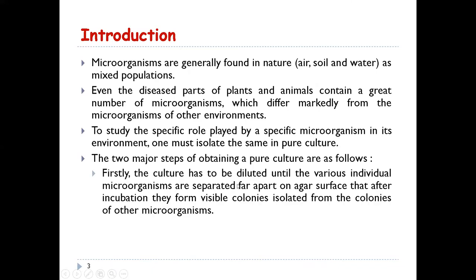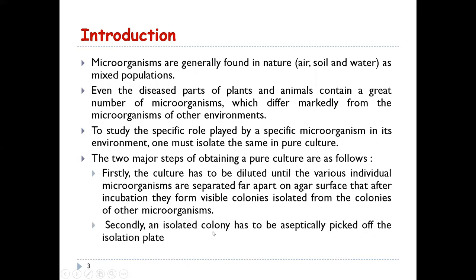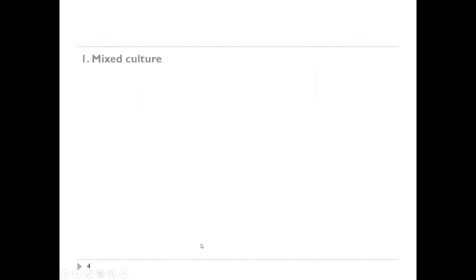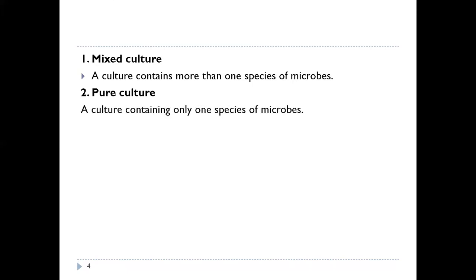Two major steps of obtaining a pure culture are: first, you dilute the culture on an agar surface so that after incubation they form visible colonies; and secondly, after isolated colonies have been obtained, they must be aseptically picked off onto an isolation plate and then incubated. There are two types of culture: mixed culture, which contains more than one species, and pure culture, which contains only one species of microbes. The isolation technique is used to remove the desired microorganism from the mixed culture and transfer it to a pure culture.